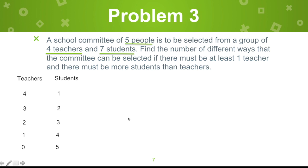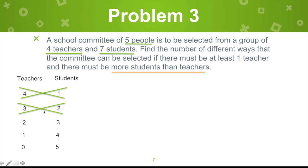Now let's try to satisfy the two conditions. The first condition is there must be more students than teachers. So which possibilities satisfy this? We eliminate 4 teachers and 1 student — fewer students than teachers. We also eliminate 3 teachers and 2 students — 2 is less than 3. Now there's another condition: at least one teacher, so 0 teachers and 5 students is also eliminated because there's no teacher in that committee.